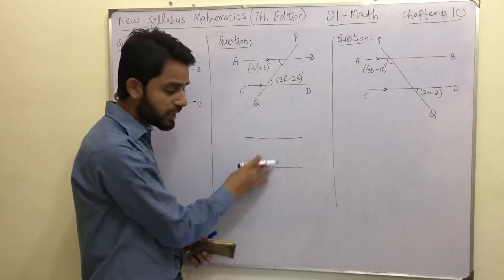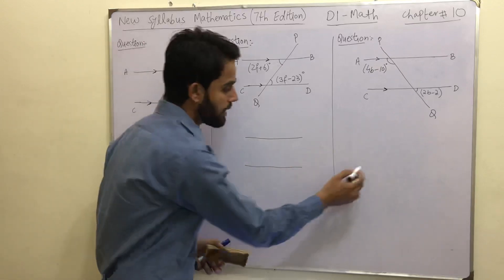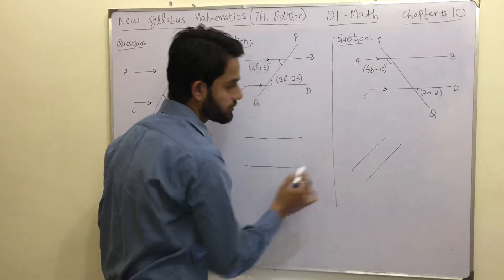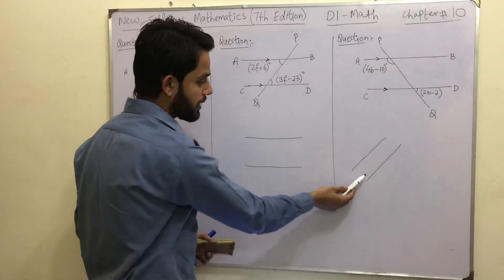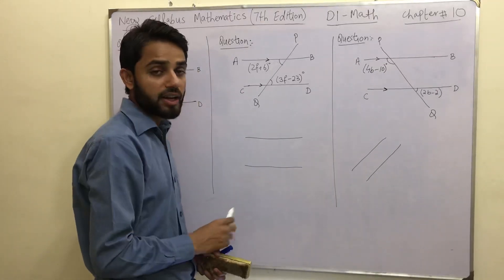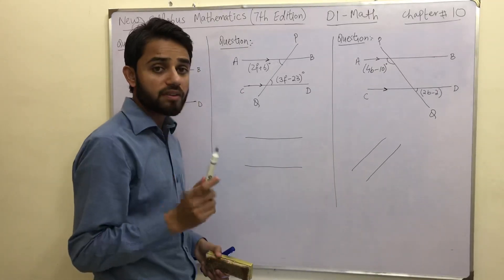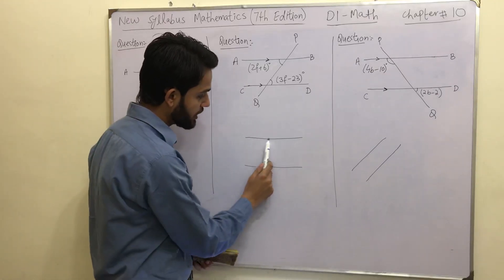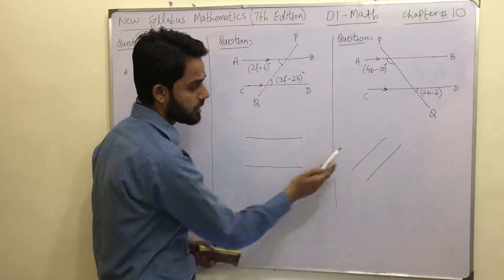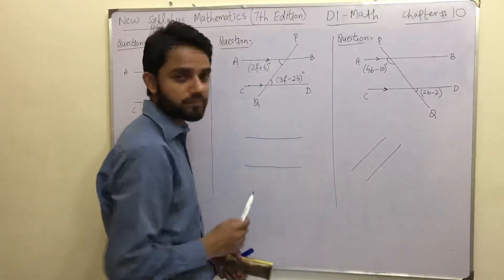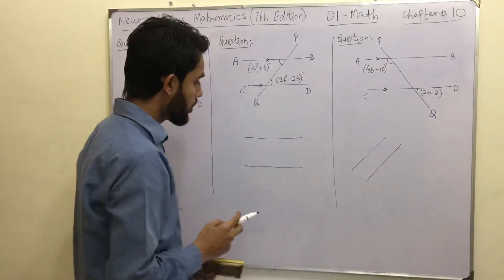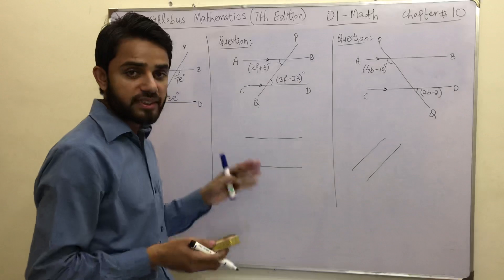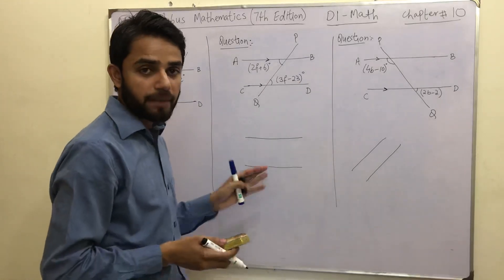This is not the only case where you can have parallel lines. Parallel lines could also be like this — these are also parallel lines. It is not always important to have parallel lines along the x-axis; you can take them like this as well. So we have just learned what parallel lines are.